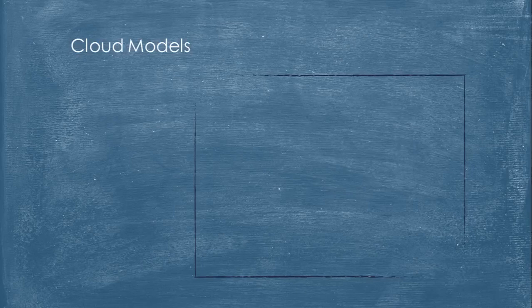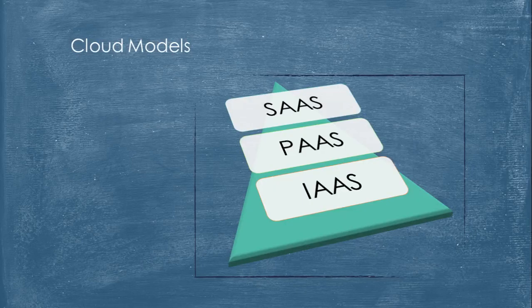Let's try to understand the various cloud models: SaaS, PaaS, and IaaS. SaaS is Software as a Service, PaaS is Platform as a Service, IaaS is Infrastructure as a Service.